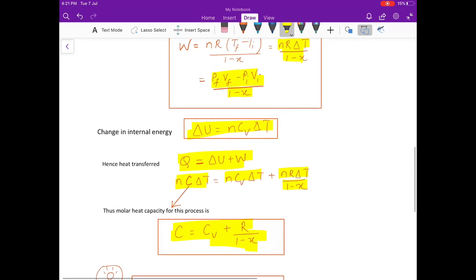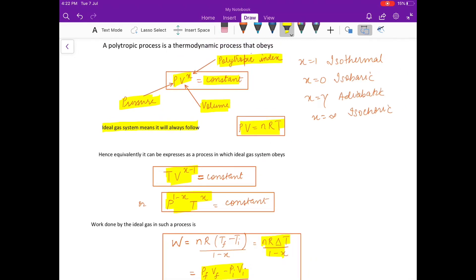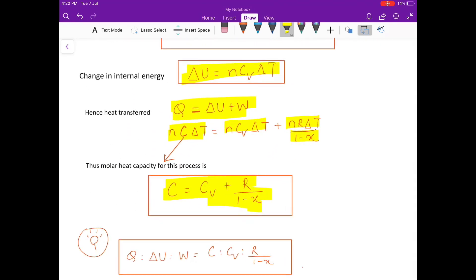So, for any process, whatever polytropic one is satisfying, if you can find this PV to the power X constant, or TV to the power X minus 1 constant, or this PT terms, if you can identify X, you can directly say the heat capacity, molar heat capacity for this process is CV plus R upon 1 minus X. There are many questions in Irodov which are solved directly by using this. Otherwise, you will take more time by actually integrating using the first law. So, you can save your time by this thing.